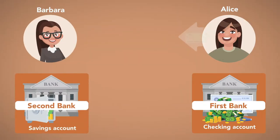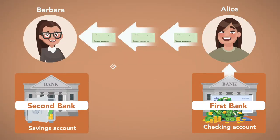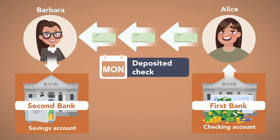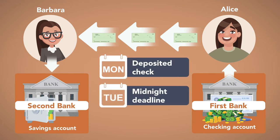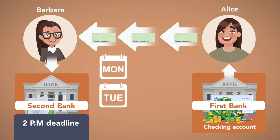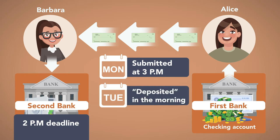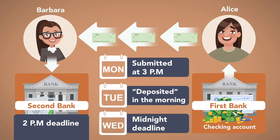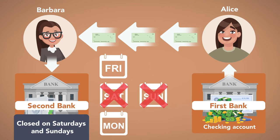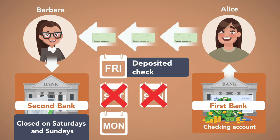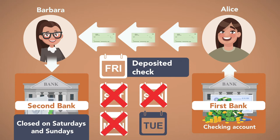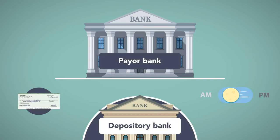For example, assume Alice writes Barbara a check drawn on Alice's account at First Bank, and Barbara deposits the check into her savings account at Second Bank on Monday. The midnight deadline would be the next banking day, which is Tuesday. If the bank's deadline is 2 PM and Barbara waited until 3 PM to deposit the check on Monday, then the code would view the check as if it was deposited on Tuesday morning and the midnight deadline for processing would be midnight Wednesday night. If Second Bank is closed on Saturdays and Sundays and Barbara deposited the check on Friday morning, then the midnight deadline would be Monday; if Monday were a holiday, then it would be Tuesday.